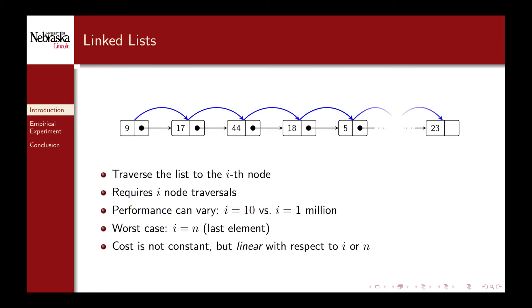In contrast with a linked list an index-based retrieval method is not as simple. To get the i-th element we have to traverse i nodes. As a consequence the number of operations and thus the total performance can vary depending on which element we want to retrieve.